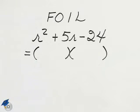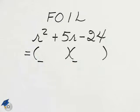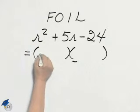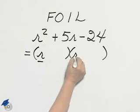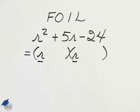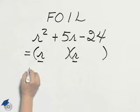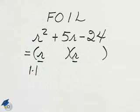Let's think about the word FOIL. In these first two slots have to be the entries that multiply to be r squared. Well, that's easy enough: r and r. The coefficients for r squared would be like 1 times 1.